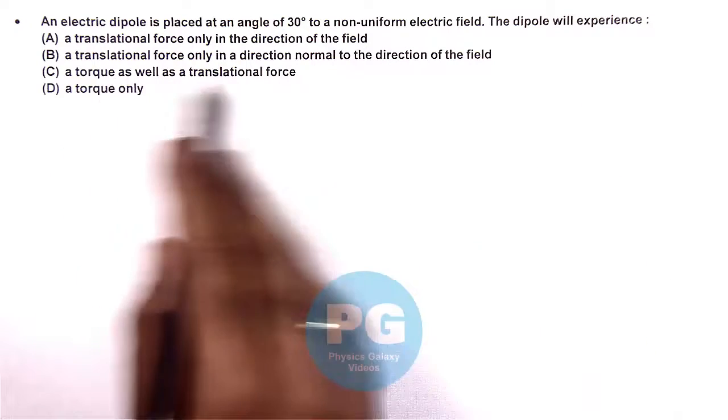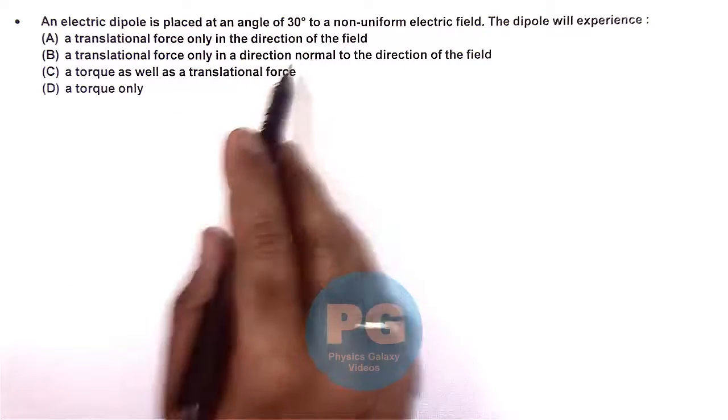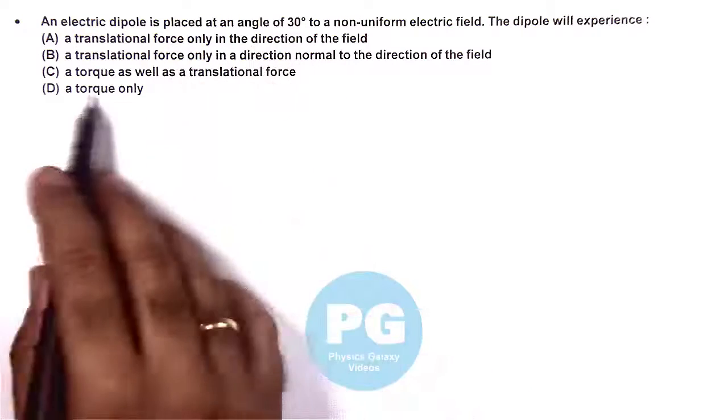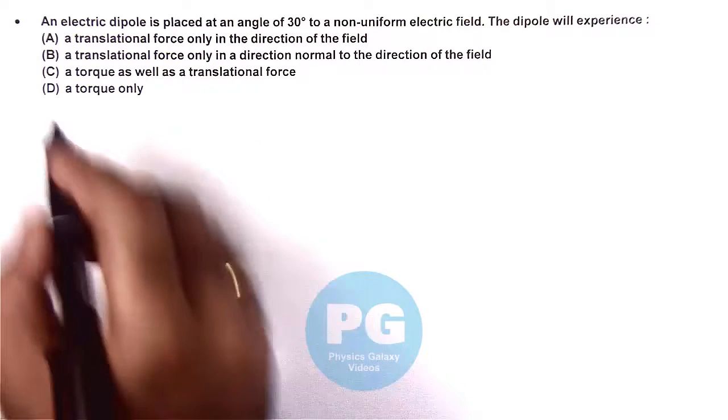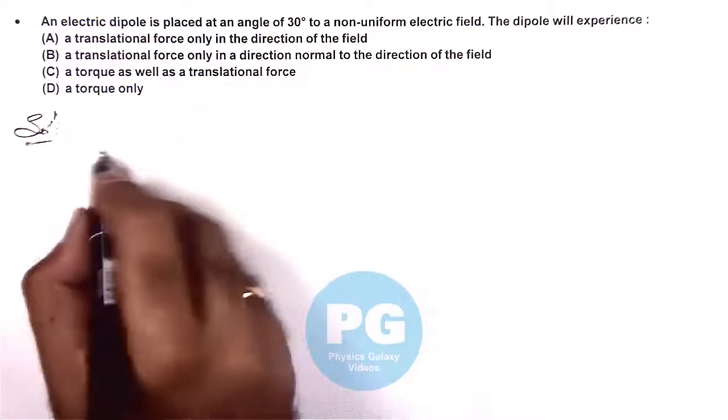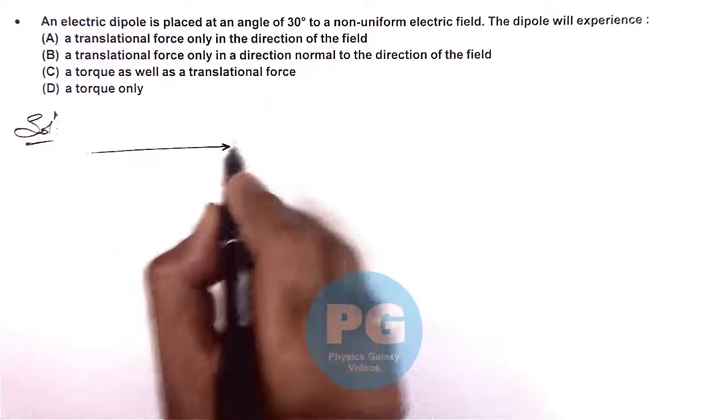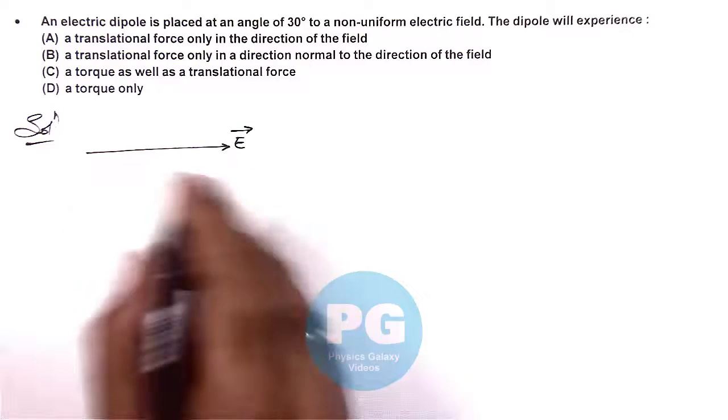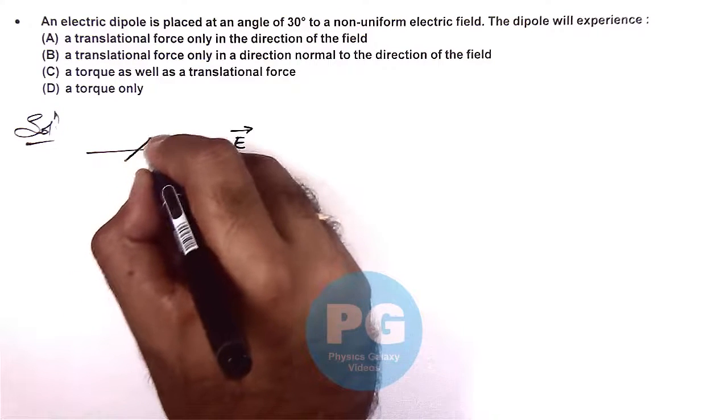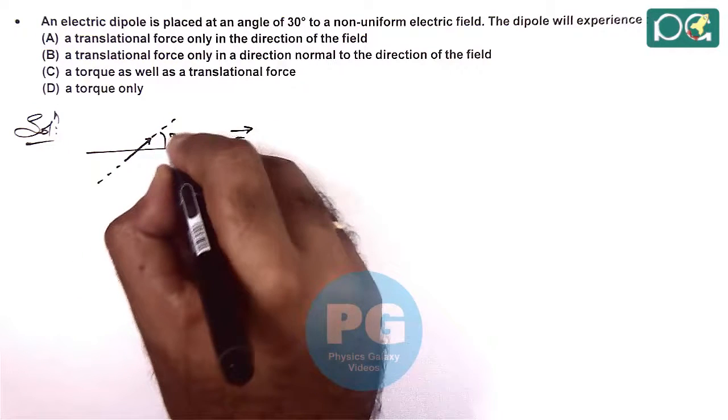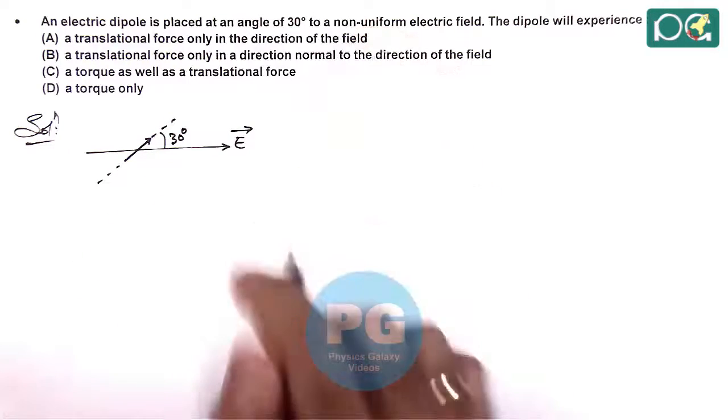We need to check the translational force and the direction of translational force as well as the torque if it is acting on it. So if we visualize the situation given here, if this is the direction of electric field and from the direction of electric field a dipole is placed, the direction of this dipole is making an angle 30 degrees to the non-uniform electric field.